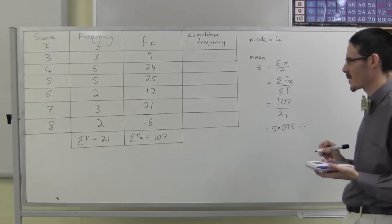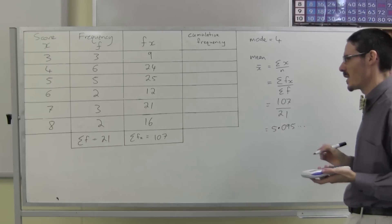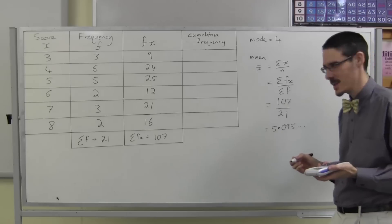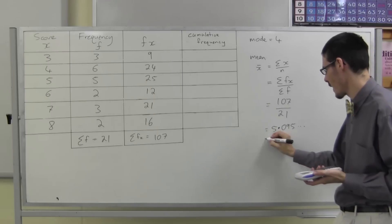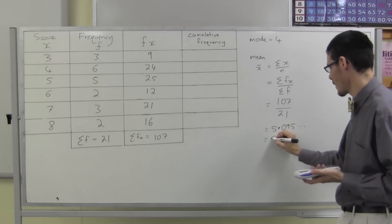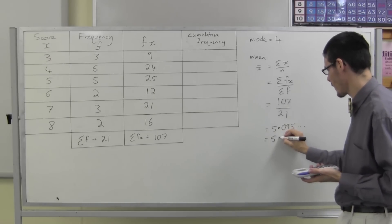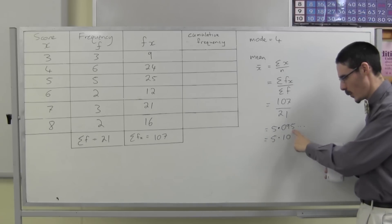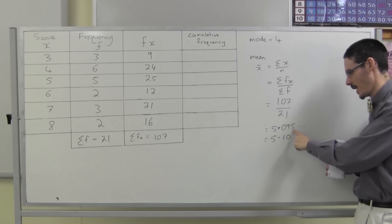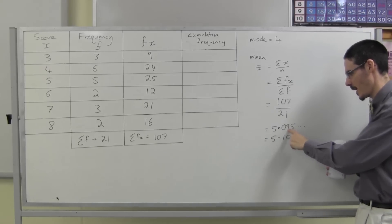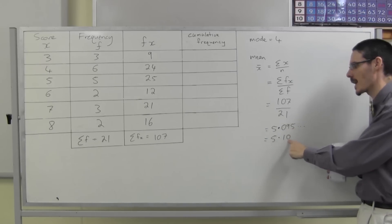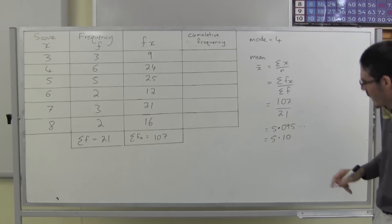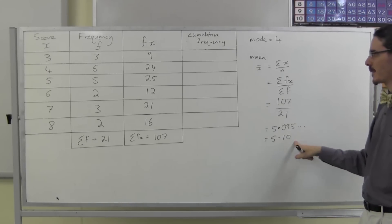How much do I want to round? Probably more than 2 decimal digits is too much. I could round it off to 5.10, because if the third digit is more than 5 then I round up to 10. That's my mean.